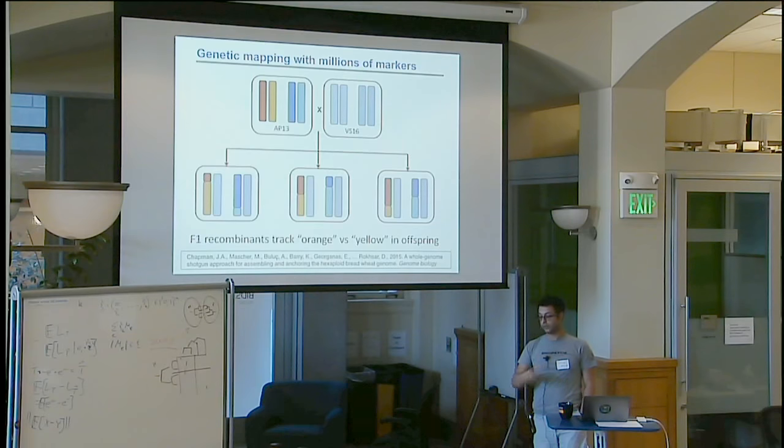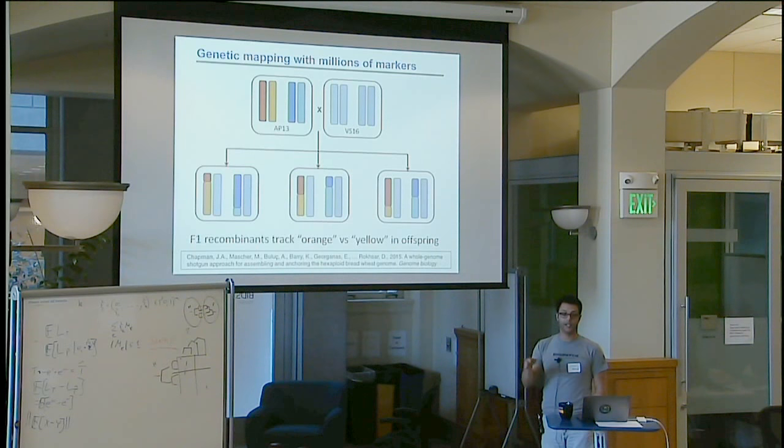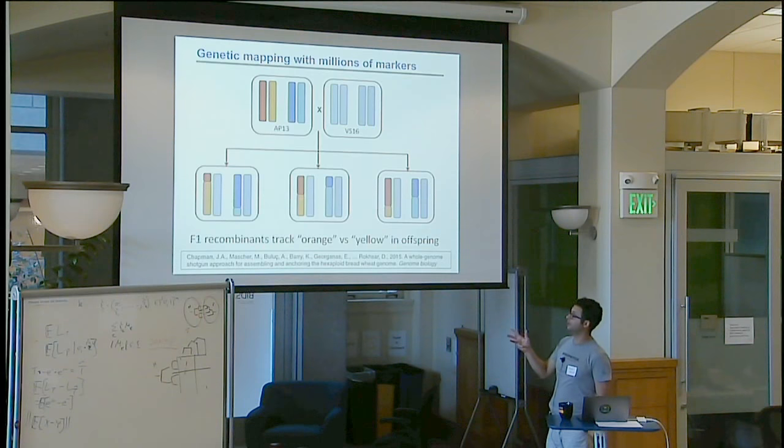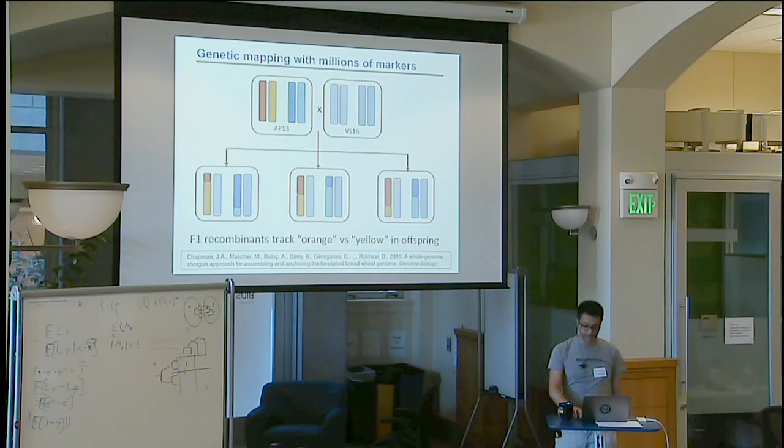And then if you sequence a big population of plants and looking at how they cross over, you can then figure out marker A, SNP1 goes here, SNP2 goes here. And you can even figure out the order between them, because things that are physically close to each other are usually at a higher probability of staying together. That's the basic approach.